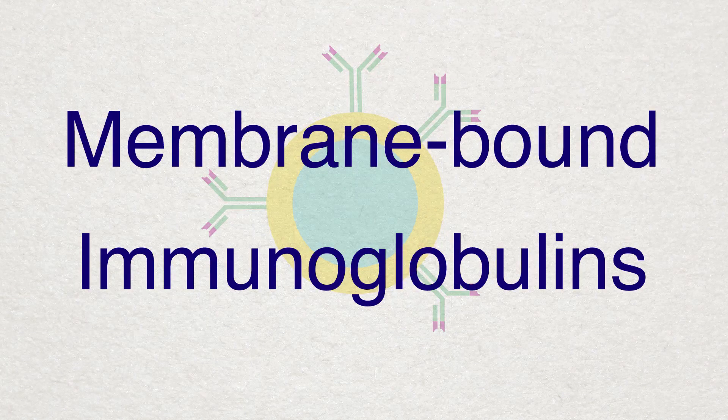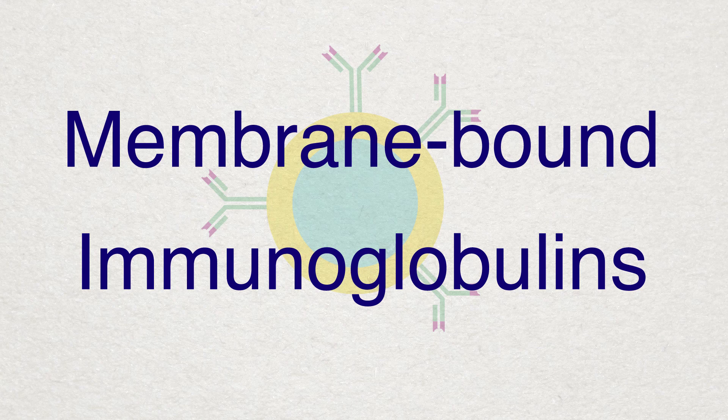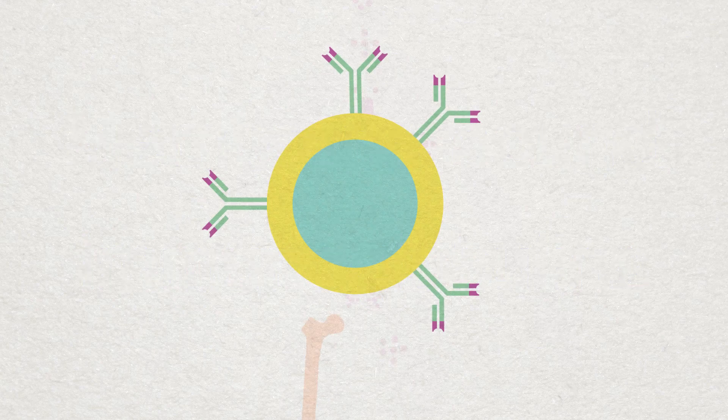The cell begins to make unique protein receptors that are inserted into its plasma membrane. These are called immunoglobulins. The receptors are needed to recognise individual antigens.